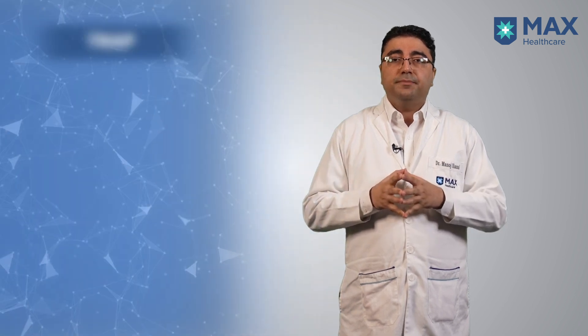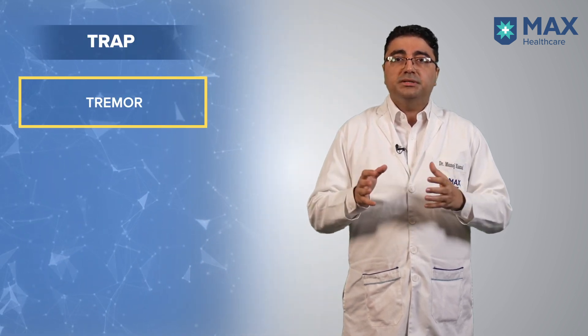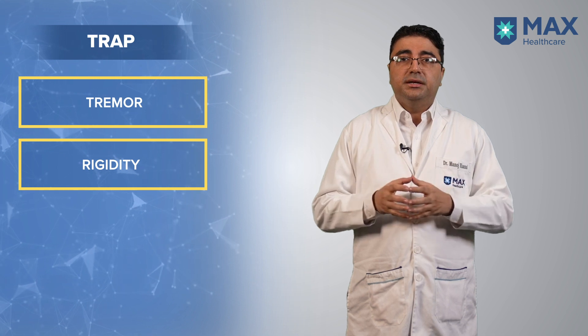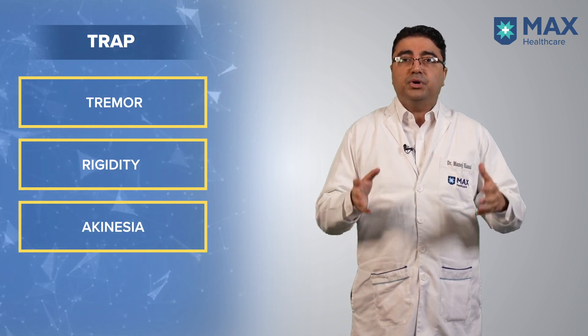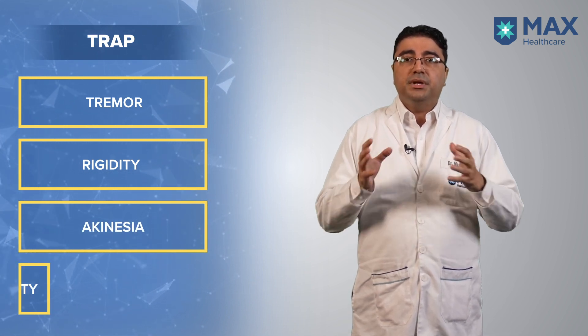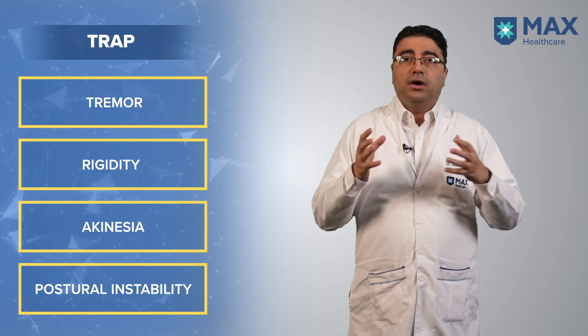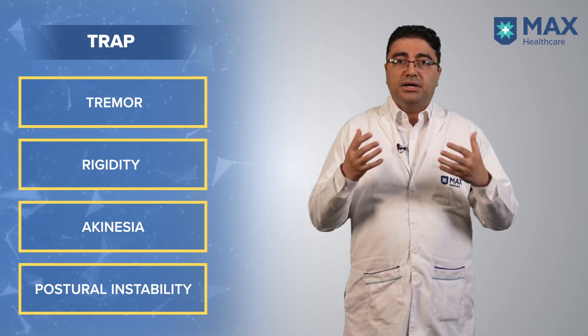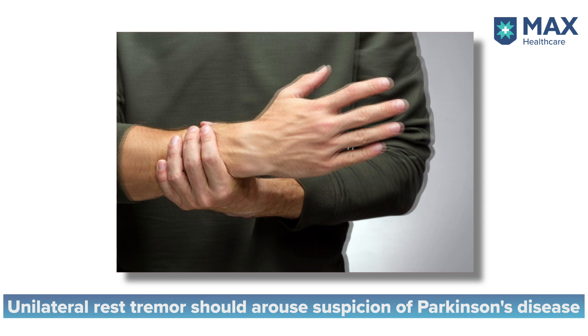The symptoms of Parkinson's disease can be simplified in the form of TRAP. TRAP is T for tremors, R for rigidity, A for akinesia or hypokinesia or bradykinesia, and P for postural instability or gait imbalance or inability to walk. Tremor is in the form of a resting tremor, unilateral, on one hand, and it can involve other parts of the body gradually and slowly.